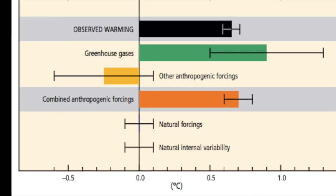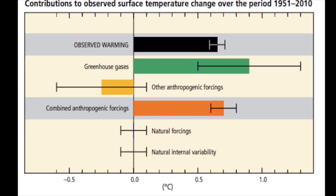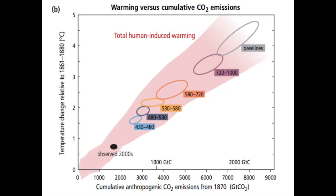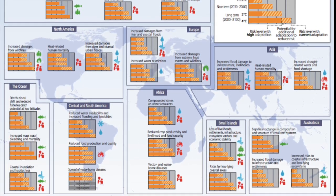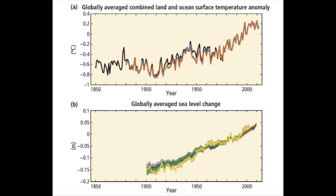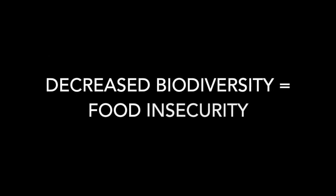Renewable energy has gained further momentum due to the looming effects of climate change. Without a decrease in current rates of carbon dioxide emissions, the world is likely to see a 3.7 to 4.8 degrees Celsius temperature increase by 2100. This would mean decreased production of wheat, rice, and maize — key food sources — and many plants and animals would face extinction, decreasing biodiversity and causing food insecurity.